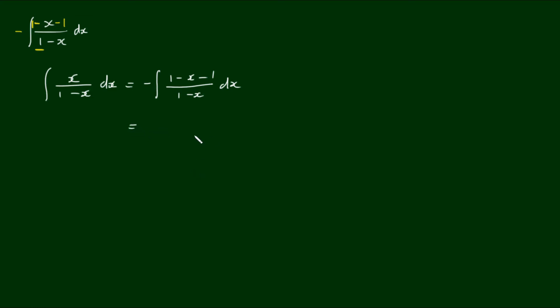Well, now we can separate the integrand into 1 minus x over 1 minus x minus 1 over 1 minus x. Okay, so the first term here, that just reduces to 1. We leave the second term as 1 on 1 minus x. Copy the rest of the components.